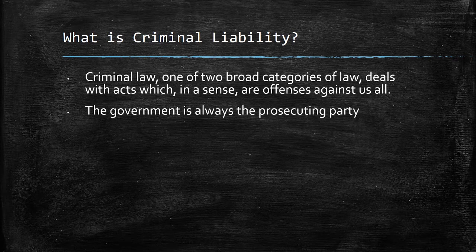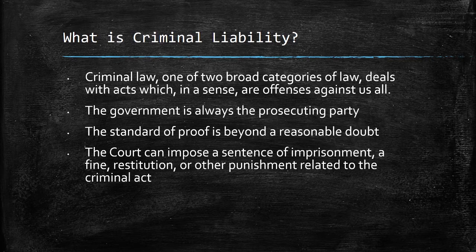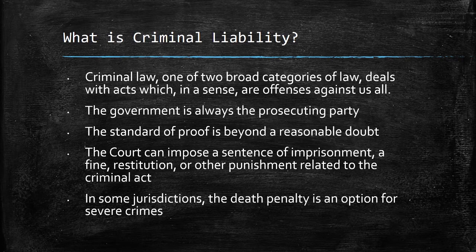The government is bringing the case on behalf of the people. By committing a crime, you violated the law — the rules that we as a country, state, government, or city have decided everyone's going to follow. Therefore, it is the government that is the prosecuting party. In a criminal case, the standard of proof is beyond a reasonable doubt, which is a very high standard. The court can impose imprisonment, a fine, restitution, or other punishment. In certain jurisdictions, the death penalty is an option for severe crimes — Maryland is not one of those jurisdictions.